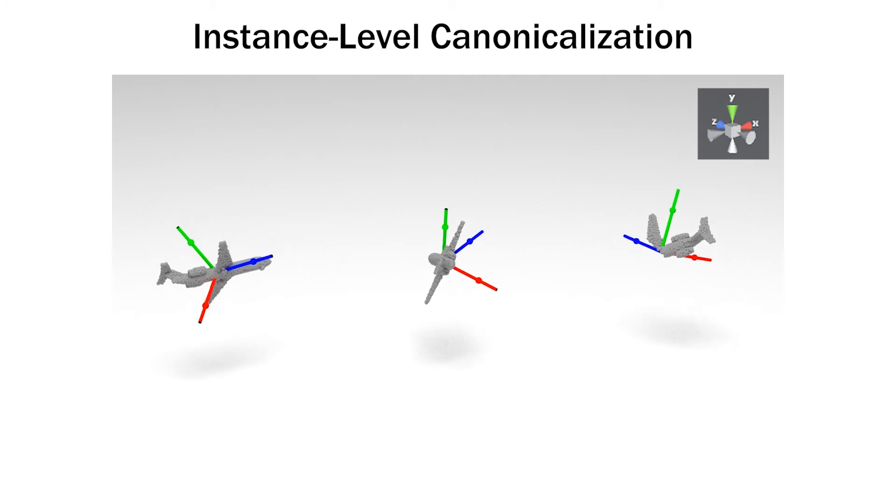In instance-level 3D pose canonicalization, our goal is to find a consistent canonical frame across different poses of the same object instance, as shown here.